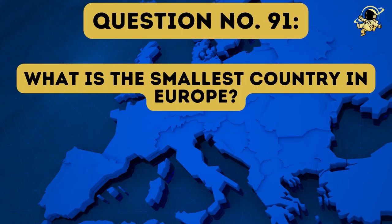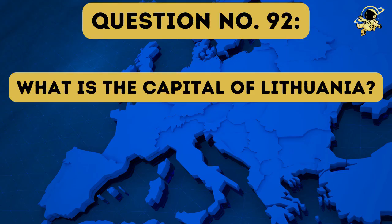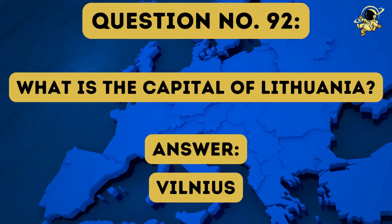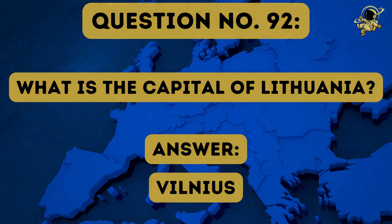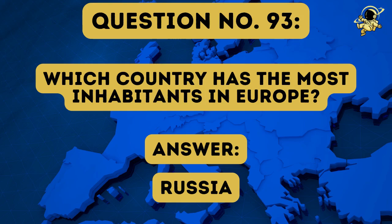Question number ninety-one: What is the smallest country in Europe? And the answer to question number ninety-one is the Vatican. Question number ninety-two: What is the capital of Lithuania? The answer to question number ninety-two is Vilnius. Which country has the most inhabitants in Europe? And the answer to question number ninety-three is the country that also has the largest area — it is Russia.